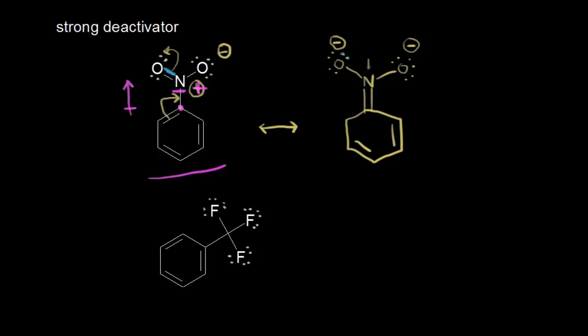This nitrogen has a plus one formal charge. Following these pi electrons in red, they move out to form this pi bond, taking a bond away from that carbon, therefore giving that carbon a plus one formal charge. You could keep going and draw more resonance structures, and they would have a positive charge in the ring. The point is that the nitro group is electron withdrawing and makes the ring more positive, which would deactivate the ring towards electrophilic aromatic substitution. So both the inductive effect and the resonance effect say that the nitro group is a deactivator — making it a strong deactivator because of both of those effects.